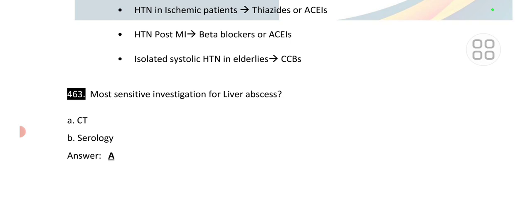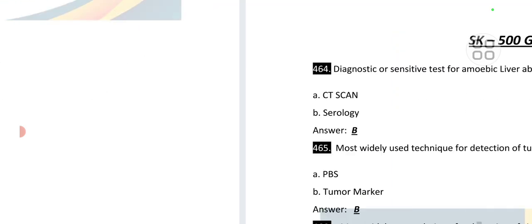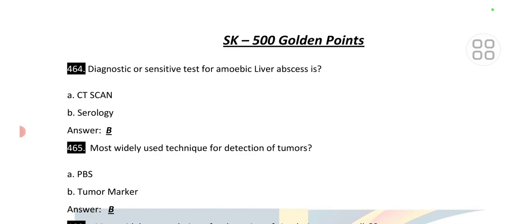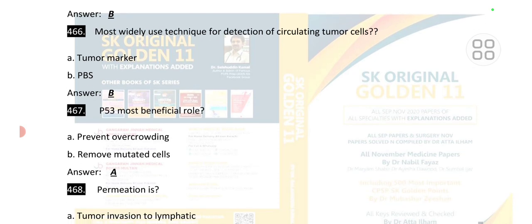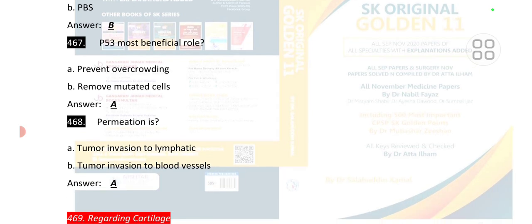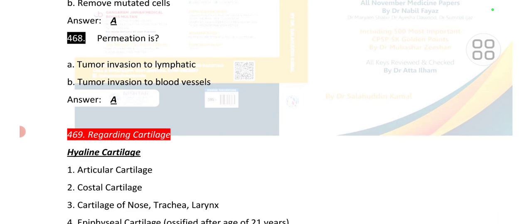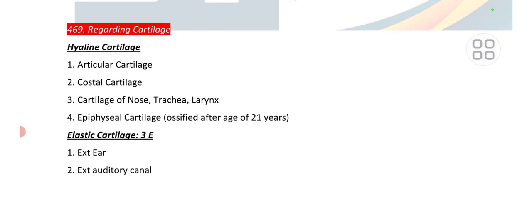Point number 463: the most sensitive investigation for liver abscess is CT scan. Point number 464: the diagnostic/sensitive test for amoebic liver abscess is serology. Point number 465: the most widely used technique for detection of a tumor is tumor marker. Point number 467: the most beneficial role of p53 is it prevents overcrowding of cells. Permeation means tumor invasion to lymphatics.